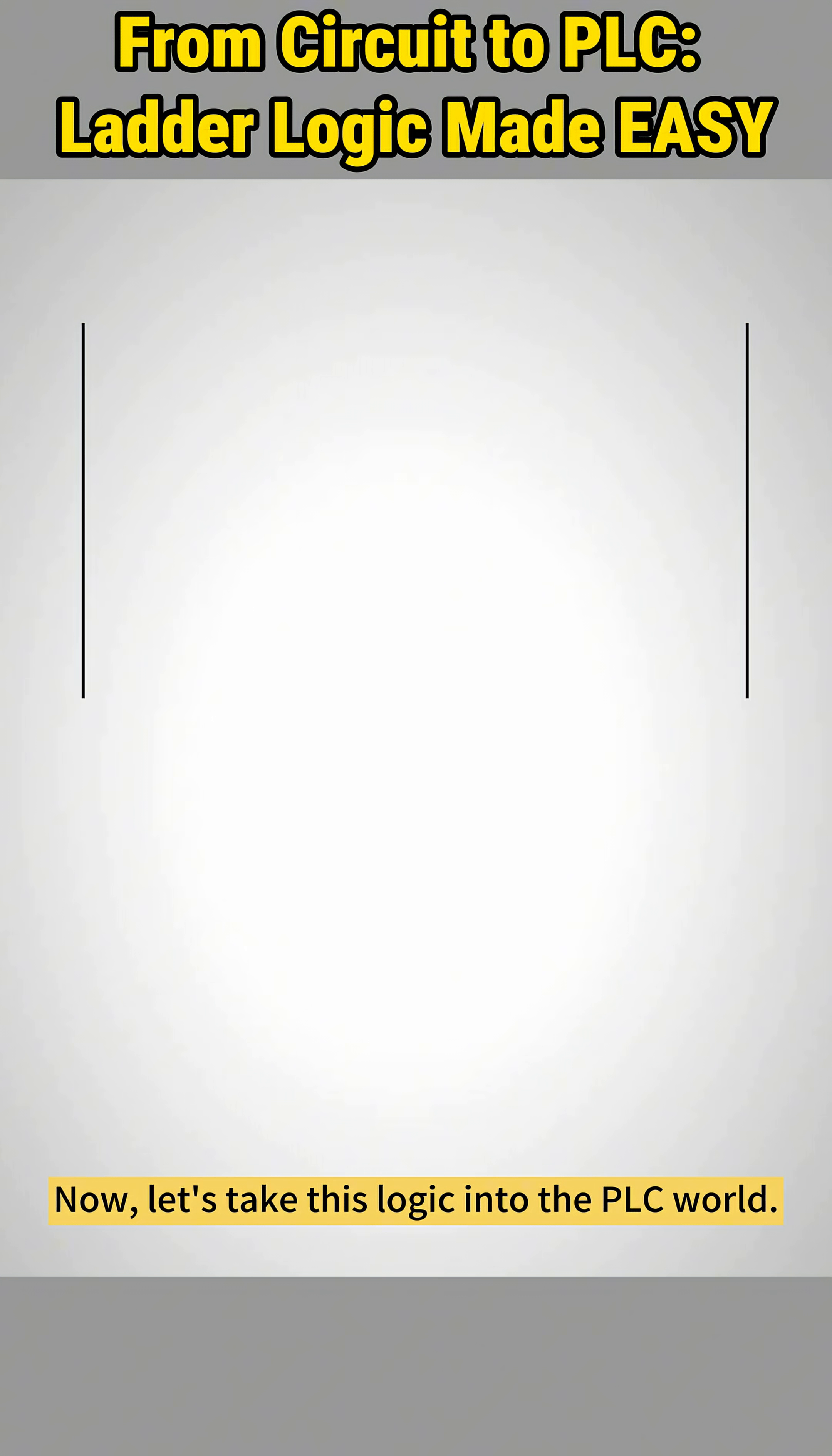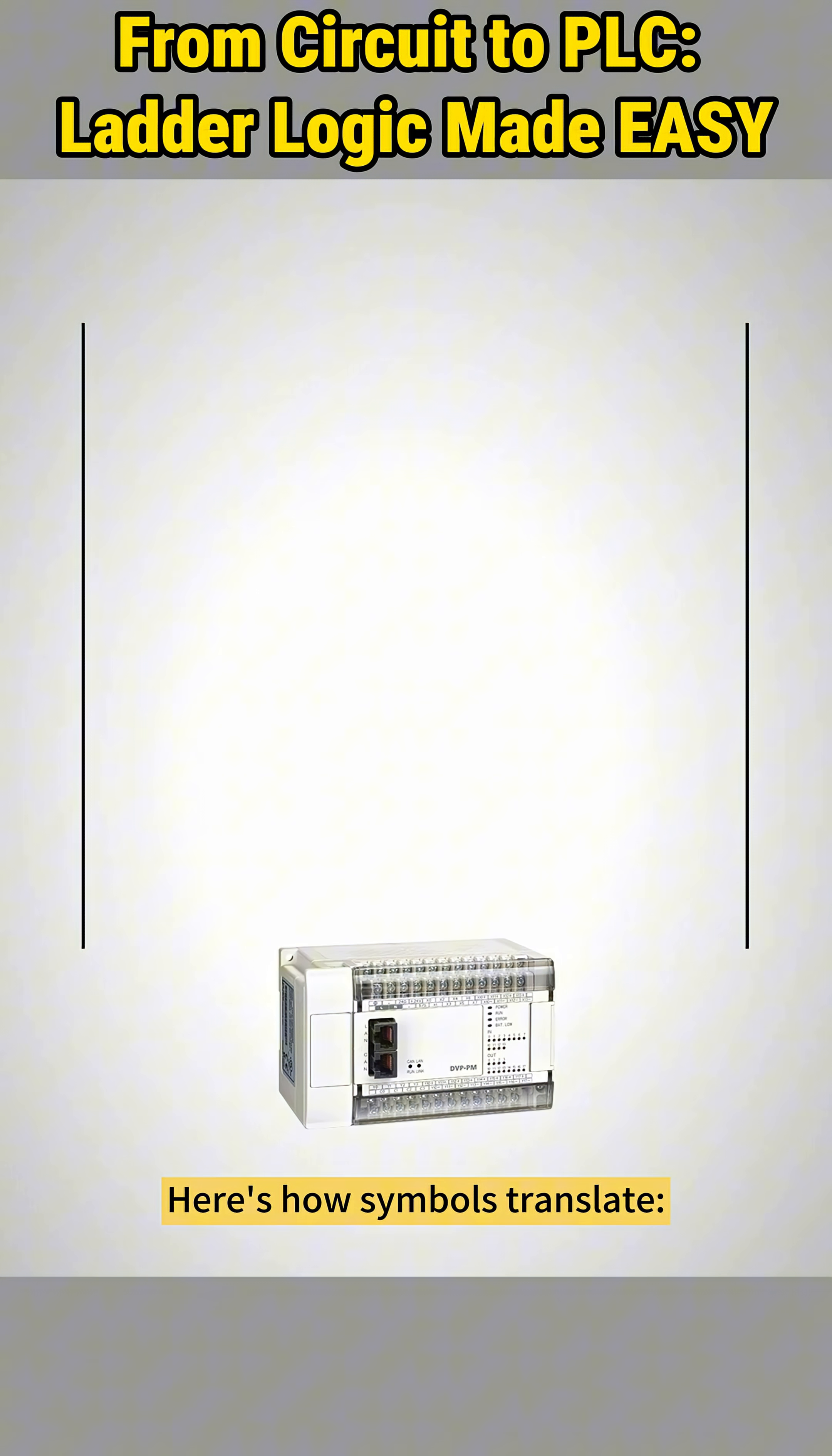Now let's take this logic into the PLC world. Here's how symbols translate. This symbol means a normally open contact. This one means a normally closed contact. And this represents your load, like a motor or bulb.